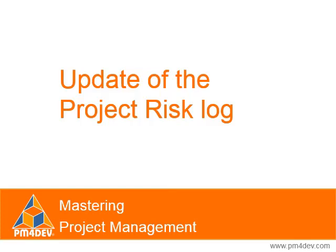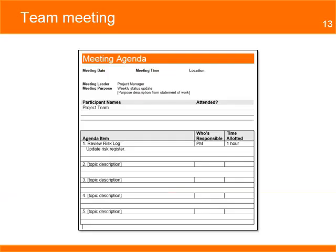For the next weekly team meeting, you add to the agenda an update of the project risk log. You ask the team members to bring any information that will help in this review. You want to review the current risks in the log and include any new risks they think can occur in the project during the next and last month.